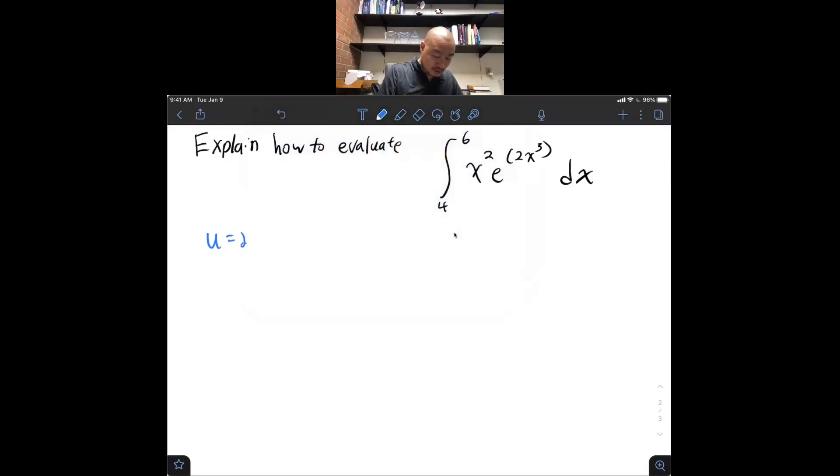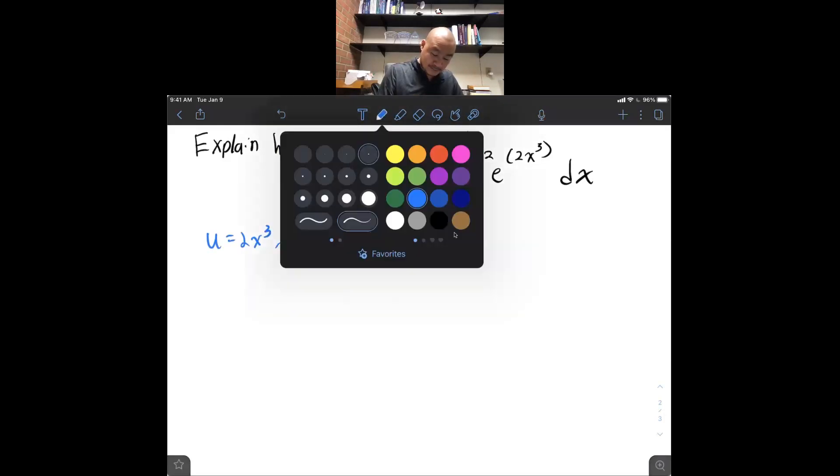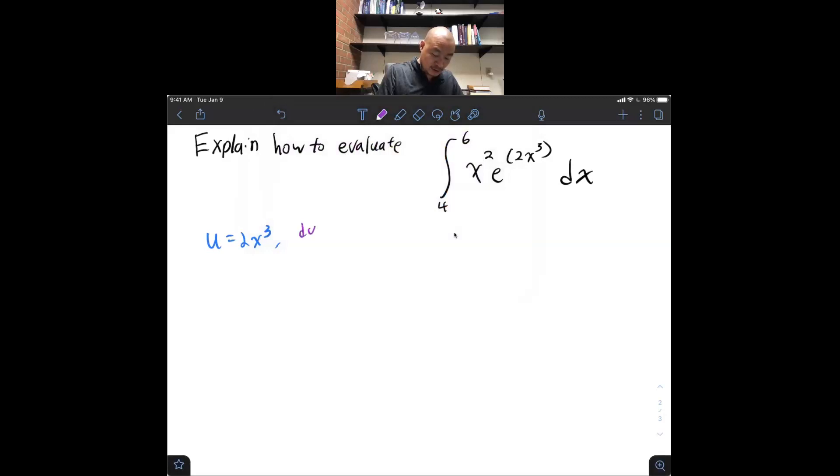if I let u be 2x cubed, I have that du dx is 6x squared. Now, note that I don't actually have a 6x squared expression in my original integral. I have x squared, I have dx, but I have no 6. And so, it makes sense then, when I rearrange this, to rewrite this as 1/6 du is equal to x squared dx.